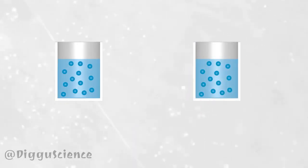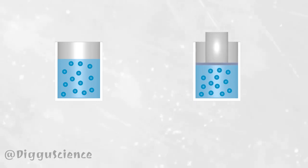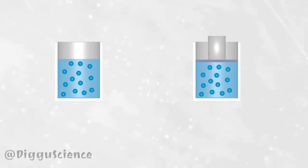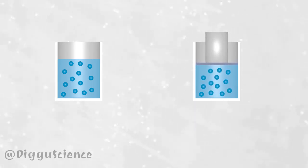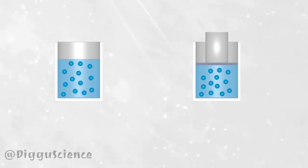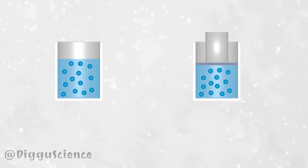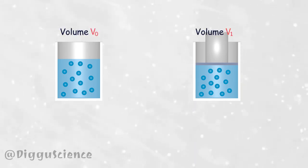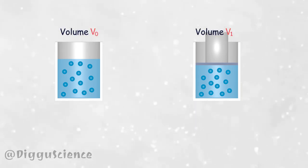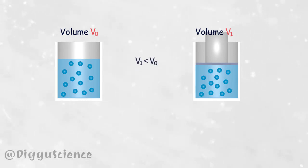When the top of the fluid is pressurized, the distance between atoms will decrease. Reducing the particle distance means that the volume occupied by the fluid is smaller than the original volume. If before getting pressure the fluid volume is V0, then after getting pressure the fluid volume is V1, where V1 is less than V0.